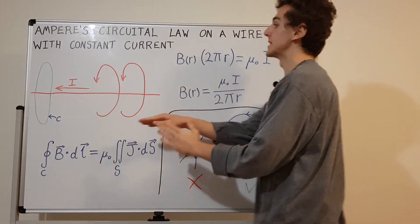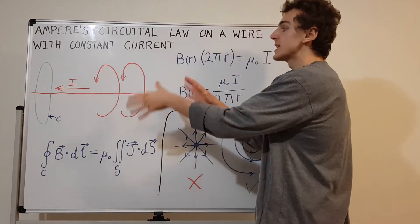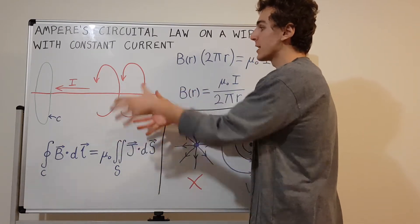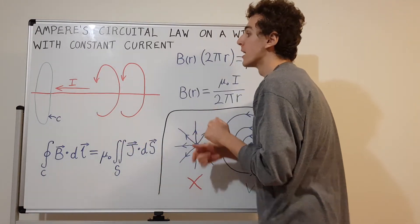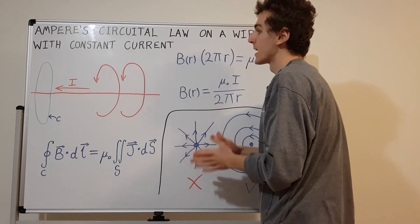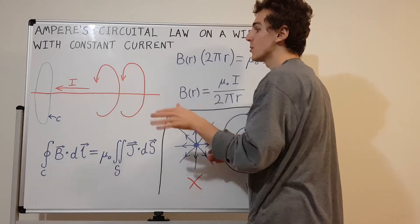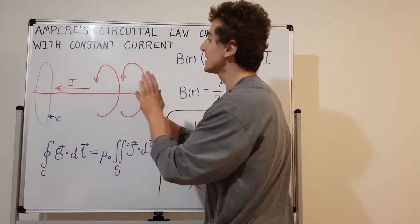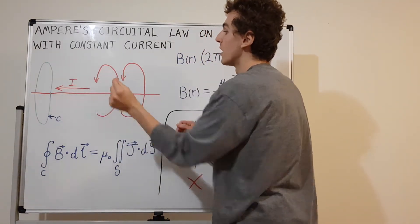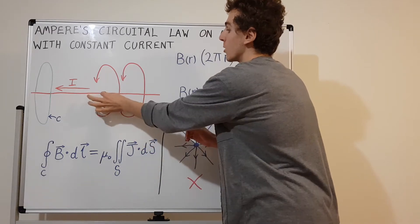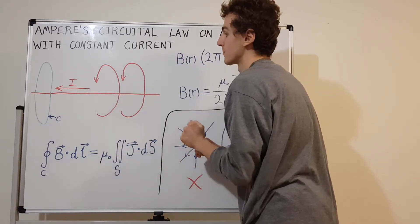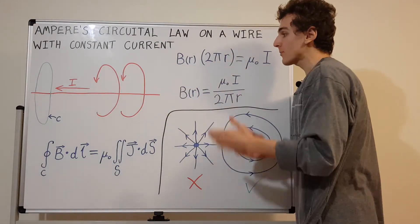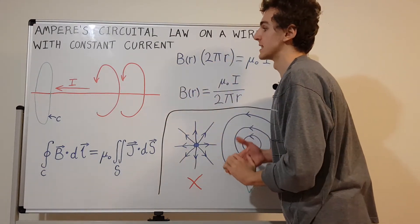We can draw a cylinder around the wire and everything is going to be symmetric. If I rotate this problem any number of degrees along the axis of the wire, it's exactly the same problem — there's no dependence on the angle. The only dependence is on the radial distance away from the axis, so cylindrical coordinates are the most convenient for this system.